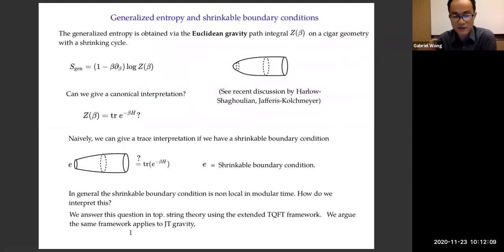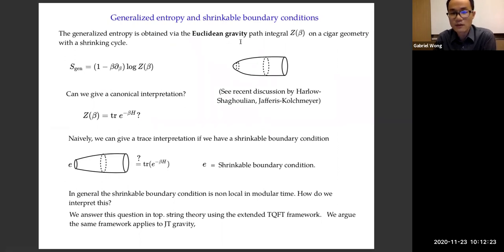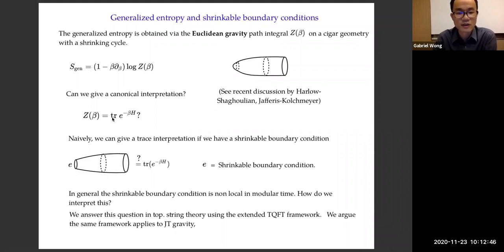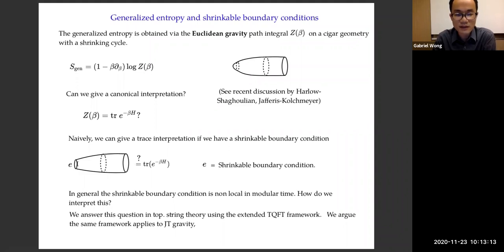Before diving into topological strings, I want to say something more about generalized entropy and shrinkable boundary conditions. The generalized entropy is obtained by doing the Euclidean path integral on a cigar geometry with a shrinking cycle — a smooth geometry where the circle boundary shrinks in the bulk. The question is whether this prescription is really an entropy. To give it a canonical interpretation, we have to view Z(beta) as a trace, even though there's no global circle. Naively, we could achieve this if we cut out a little cap and put a boundary condition E — a shrinkable boundary condition — whose job is to produce the same path integral as if you put the cap back on. However, this shrinkable boundary condition does not have to be local and generally is non-local in the modular time variable.